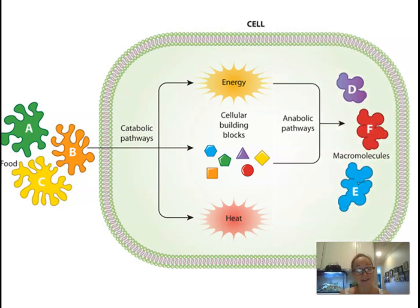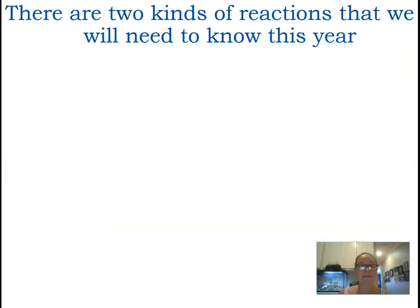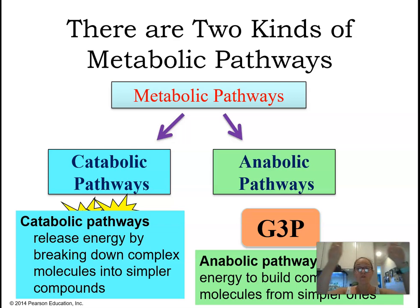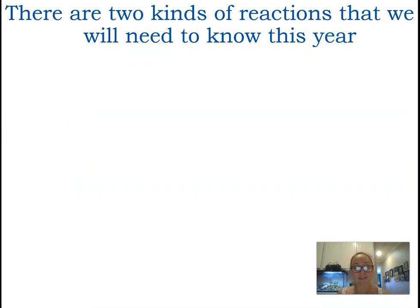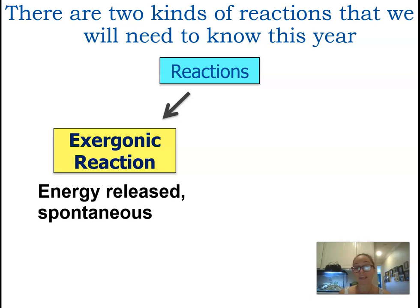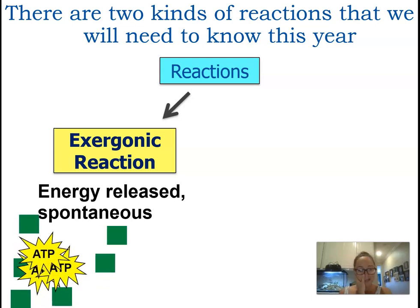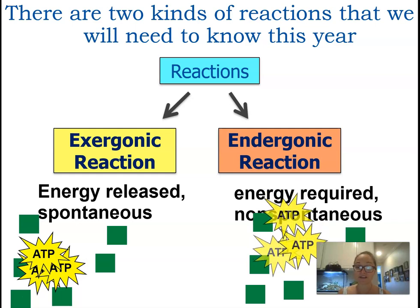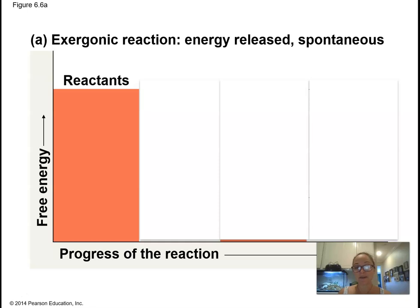Anabolic pathways require energy and building blocks to construct larger molecules. Looking within those big pathways — cellular respiration and photosynthesis — each individual step is a chemical reaction. There are two kinds: exergonic reactions, which release energy, and endergonic reactions, which require an input of energy.